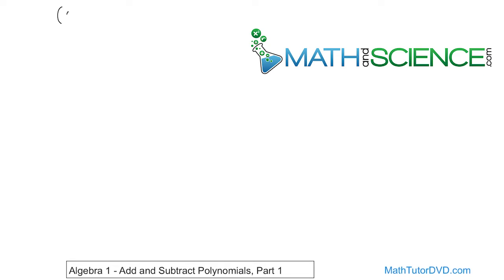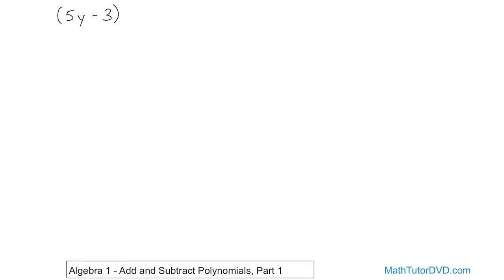For instance, if you have 5y minus 3 — that would be one polynomial — and I'm wrapping it in parentheses just to show you that it's grouped together as a polynomial, and you're adding to that another polynomial. We'll call it 2y plus 9. And you want to add these guys together.